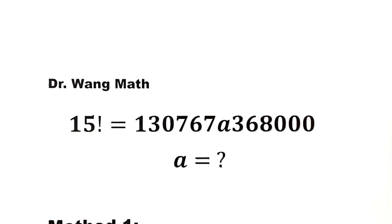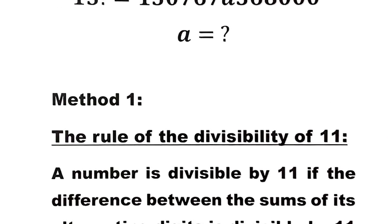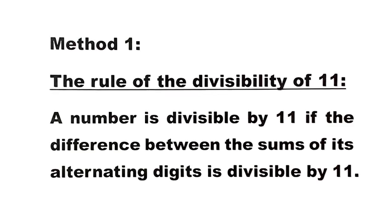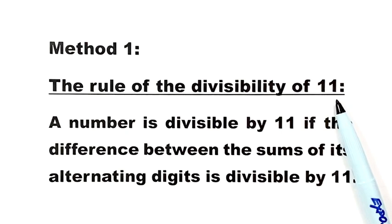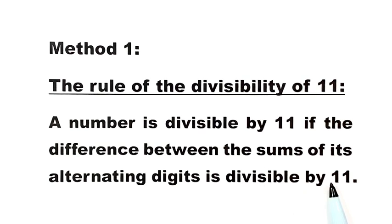We're going to use two methods to solve this question. The first method will use the rule of divisibility of 11. The rule states: a number is divisible by 11 if the difference between the sums of its alternating digits is divisible by 11.